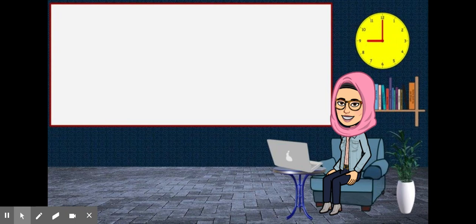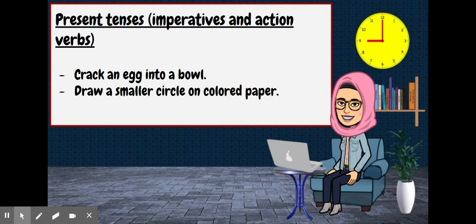First is present tenses. This includes imperatives and action verbs. For example, here I have two sentences. First, crack an egg into a bowl. So crack here is an imperative. And then the next example, draw a smaller circle on colored paper. So draw here is an imperative. So you don't need subject before this word. This is called imperatives.